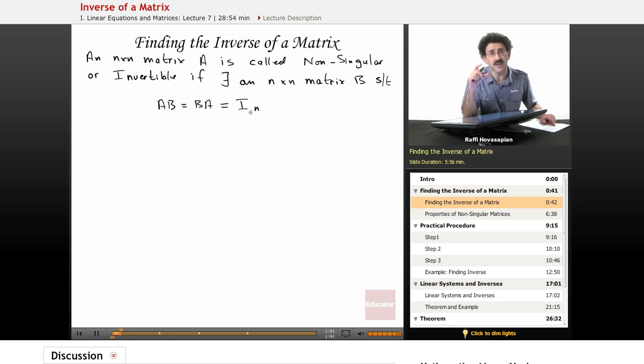Remember, the identity matrix is that n by n matrix where everything on the main diagonal is a 1. The analogy with real numbers is like taking 2 and multiplying it by 1 half to get 1, or 1 half times 2 to get 1, because the 2's cancel.